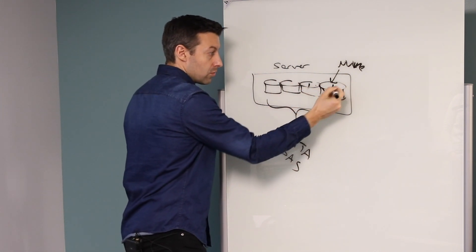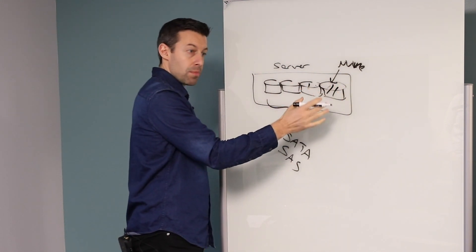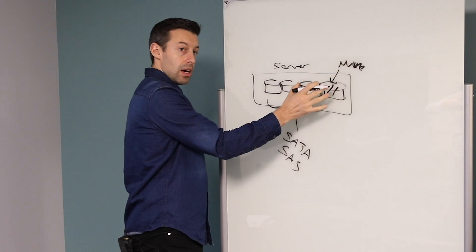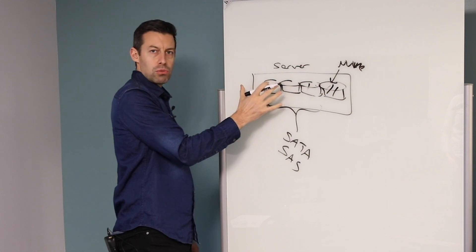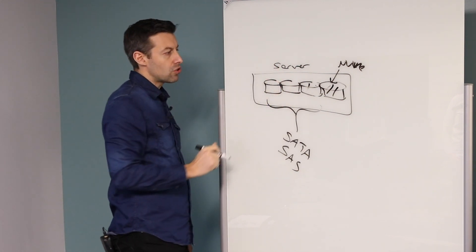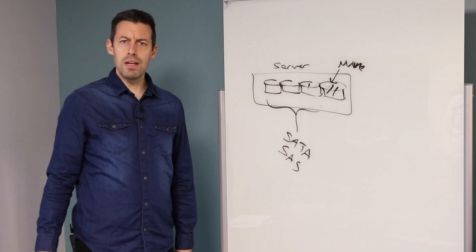So these NVMe drives would kind of act as a cache in the server. And then once those operations were done, things could be moved over to the SAS or SATA drives that were there for longer term storage for capacity. So that was one of the initial applications we saw for NVMe, kind of in the enterprise space.